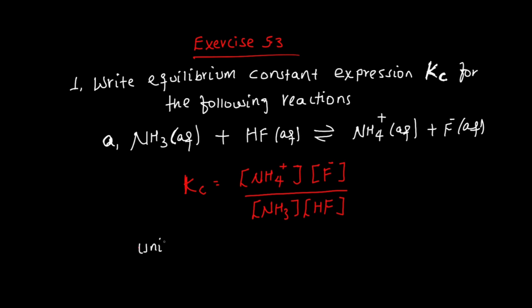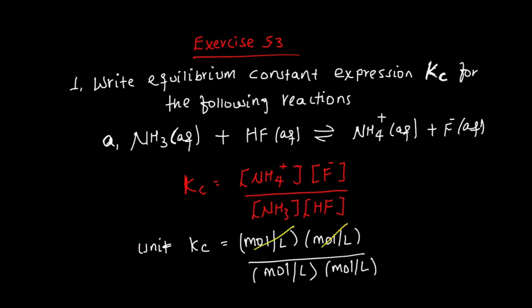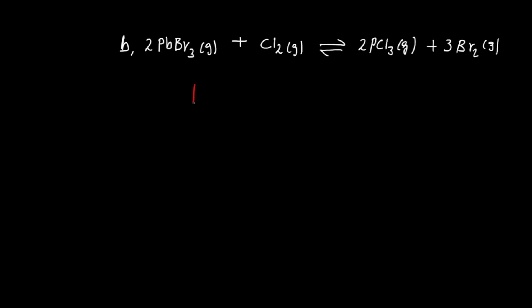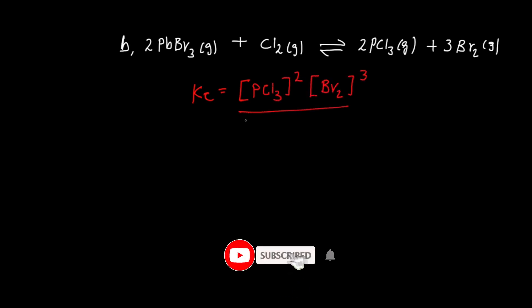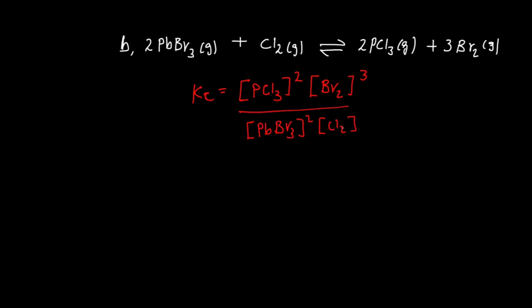The units of Kc: the concentration units of mol per liter cancel out, so Kc has no unit. For the second reaction, the Kc expression is: concentration of TCl3 to the power of 2 times concentration of Pr2 to the power of 3, divided by concentration of Tb to the power of 2 times concentration of Cl2.